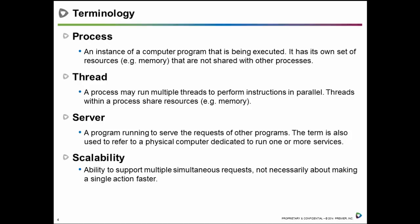Before diving in, I want to define a few terms. A process is an instance of a computer program being executed in Tableau Server. Each process has its own set of resources — for example, memory — that are not shared with other processes. Processes can grab resources and hold on to them, so you need to configure your server to support multiple processes on multiple servers. A thread is an instruction within a process; multiple instructions are executed in parallel, and threads within a process share that process's resources.